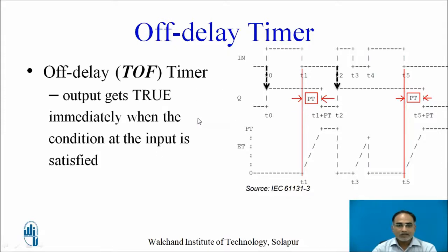The output gets true immediately when the input condition at the timer is satisfied. At t0, when input changes from 0 to 1, output also changes from 0 to 1 at the same time, but the timer is still in the off state. At t1, when input changes from 1 to 0, the timer starts and the ET value starts incrementing towards the PT value.